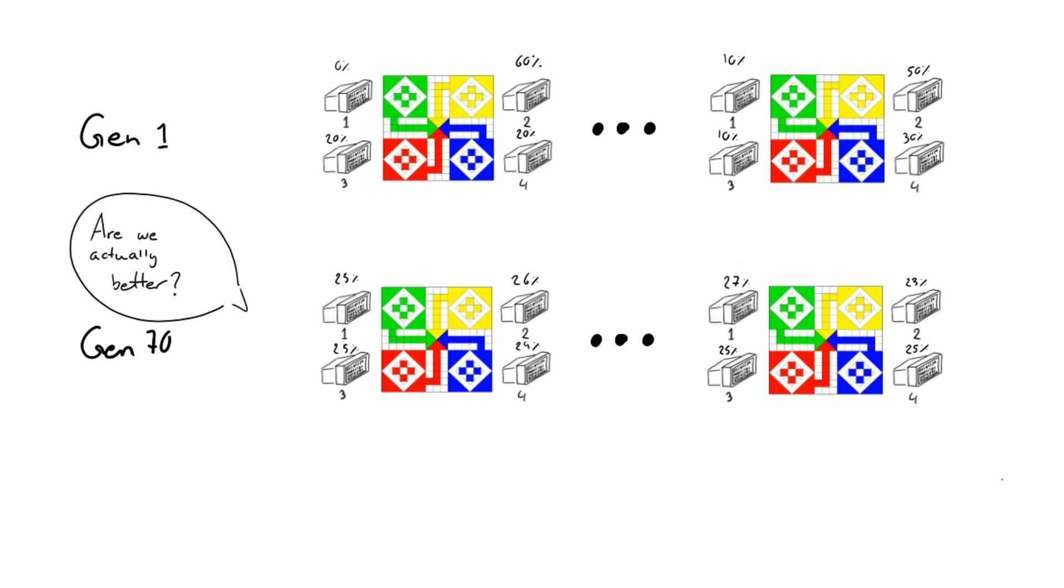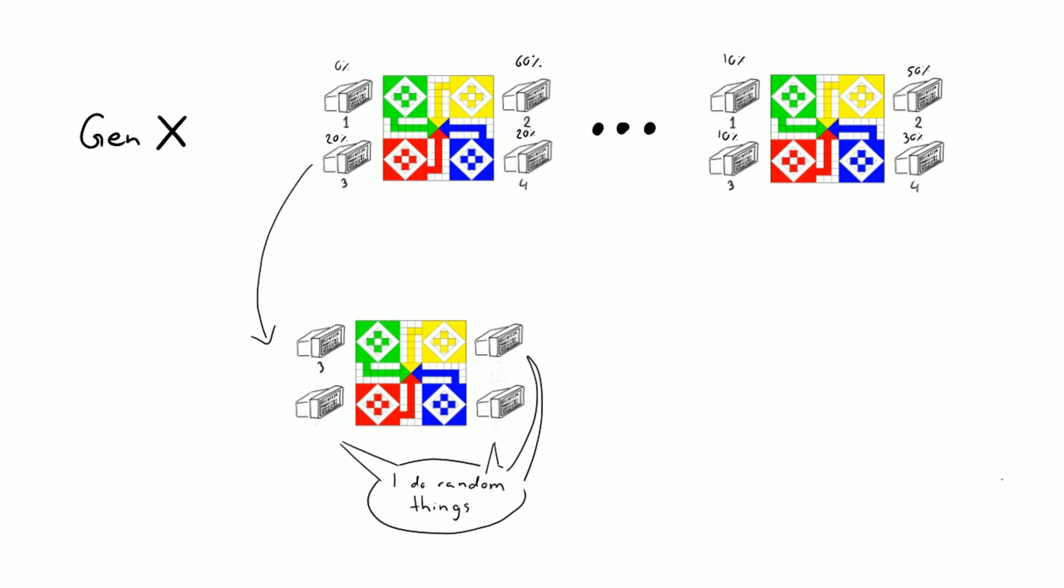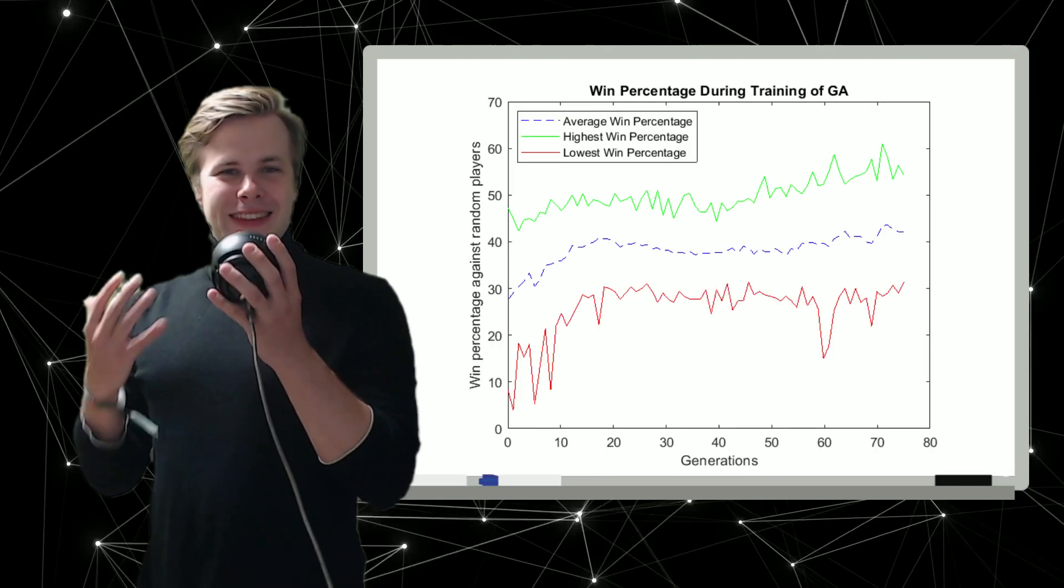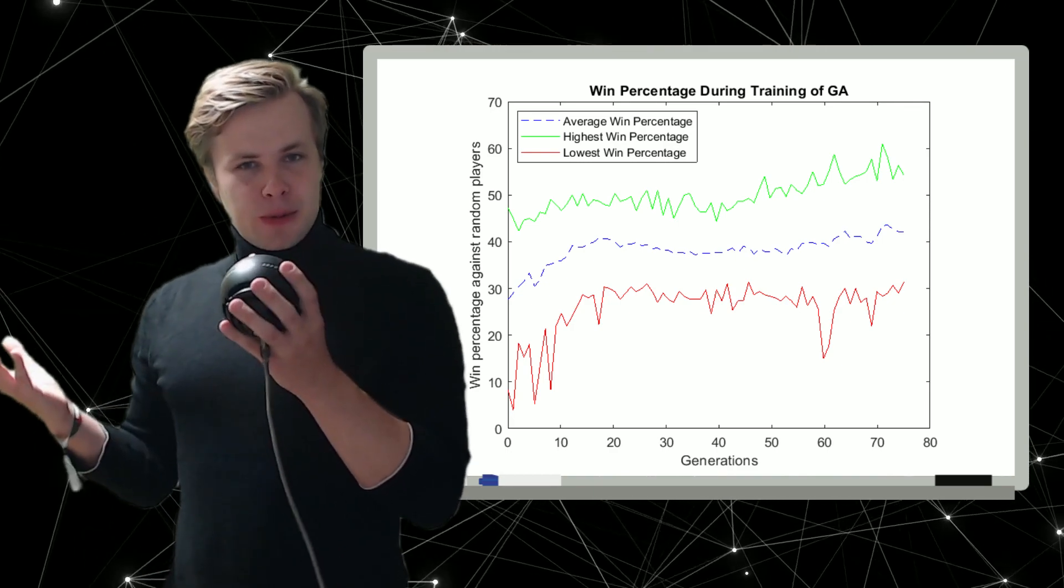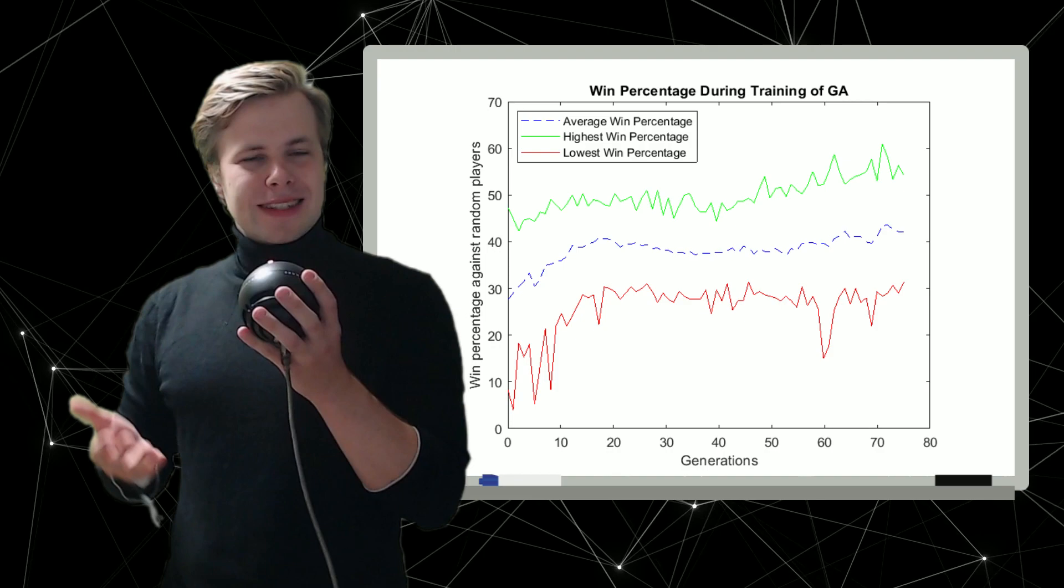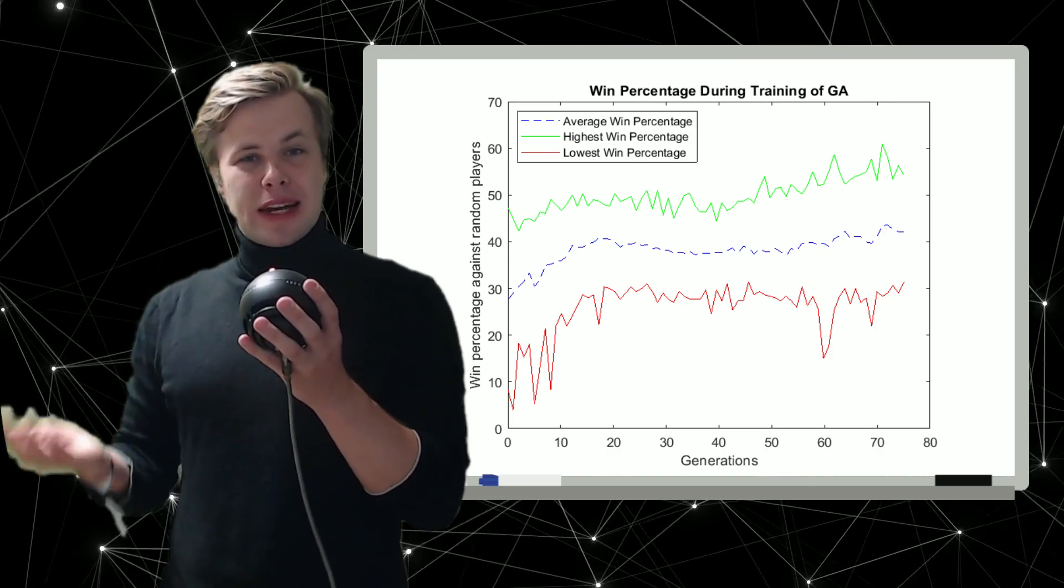And therefore after each generation is completed and new children are created, I had all of the AI also play against random bots—so one AI against three random bots for 300 games. Using that we can better estimate if one generation is better than another. And this is what the training results look like: the blue line shows the average win rate, so if we look at all the AIs and average how much they win against random bots per generation we'll get this line.